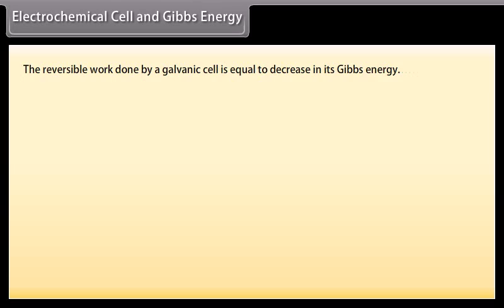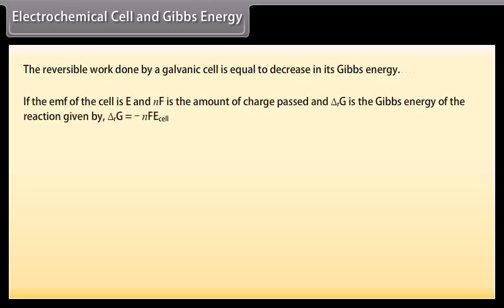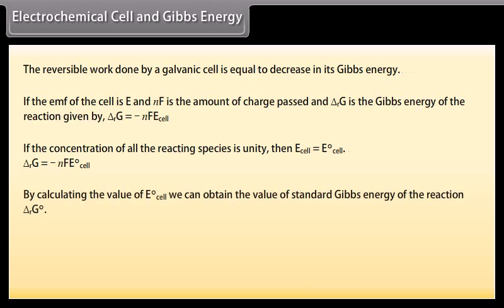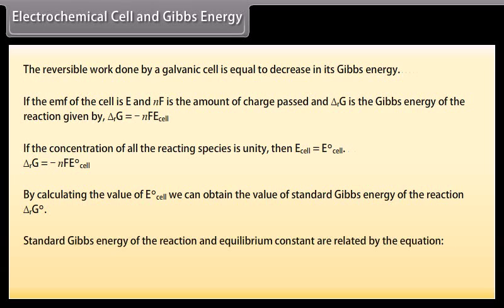Electrochemical cell and Gibbs energy: The reversible work done by a galvanic cell is equal to the decrease in its Gibbs energy. If the EMF of the cell is E and nF is the amount of charge passed, then ΔrG = −nF × E_cell. If the concentration of all reacting species is unity, then E_cell = E°_cell and ΔrG = −nF × E°_cell. By calculating E°_cell, we can obtain the standard Gibbs energy ΔrG°. The standard Gibbs energy and equilibrium constant are related by: ΔrG° = −RT × ln K.